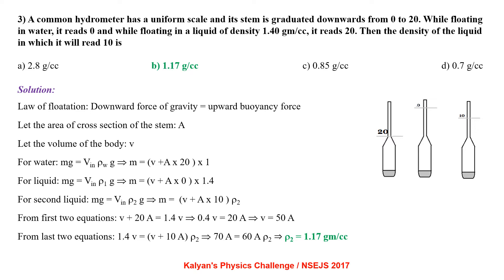Applying law of floatation: downward force of gravity equal to upward buoyancy force. Let the area of cross section of the stem be A, and the volume of the body be V. For water, Mg equal to V liquid rho w g. From there you get M equal to V plus A into 20 into 1.40 g. For liquid Mg equal to V in into rho liquid into g.